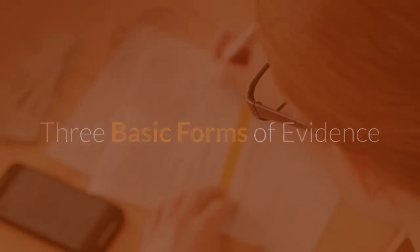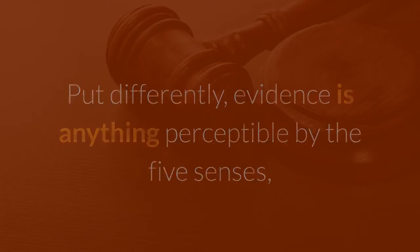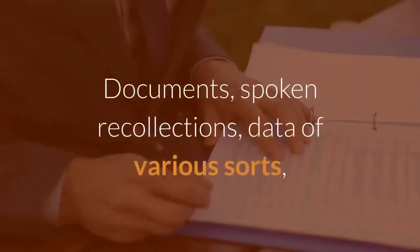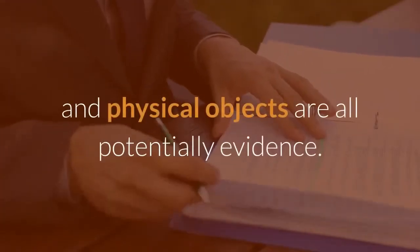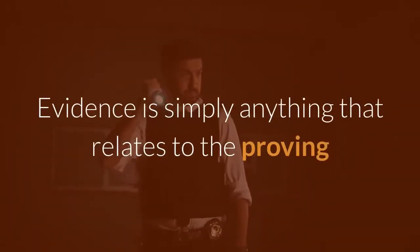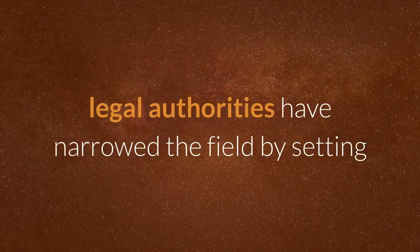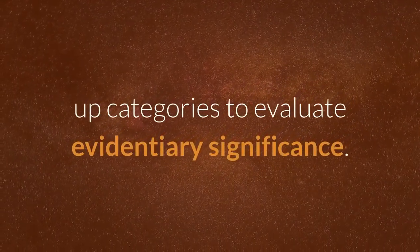There are three basic forms of evidence. Put differently, evidence is anything perceptible by the five senses, which is invoked in the process of arguing a case. Documents, spoken recollections, data of various sorts, and physical objects are all potentially evidence. Evidence is simply anything that relates to the proving or disproving of a fact or consequence. With the known universe available for court inspection, legal authorities have narrowed the field by setting up categories to evaluate evidentiary significance.